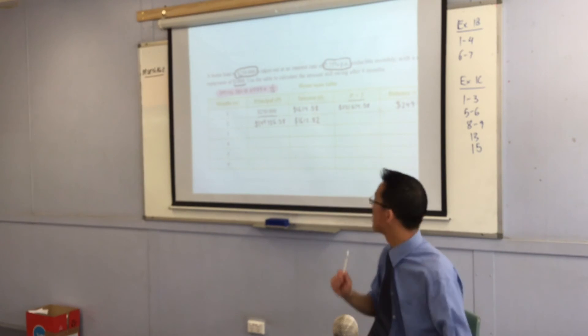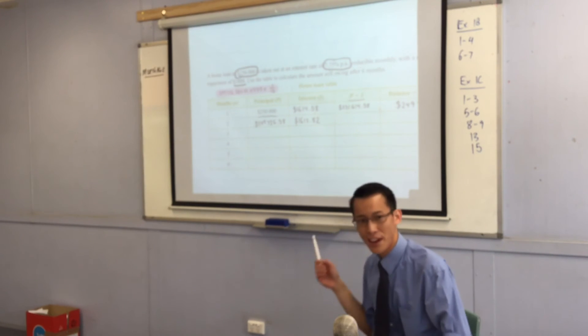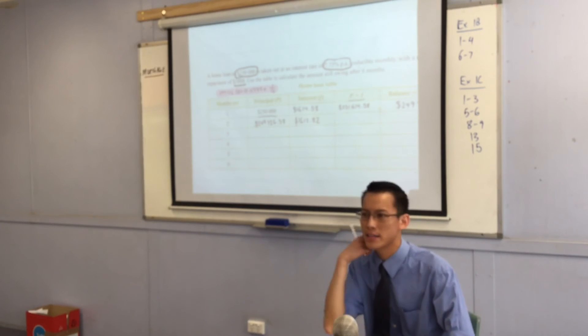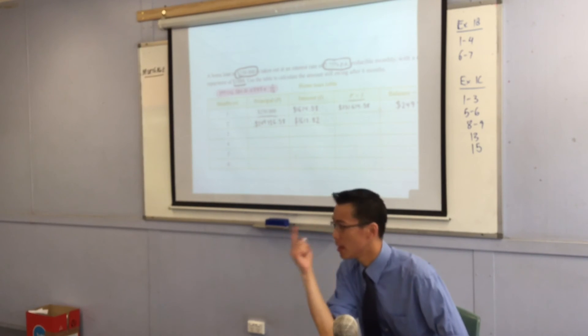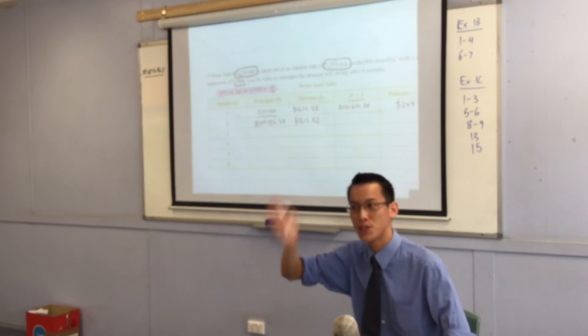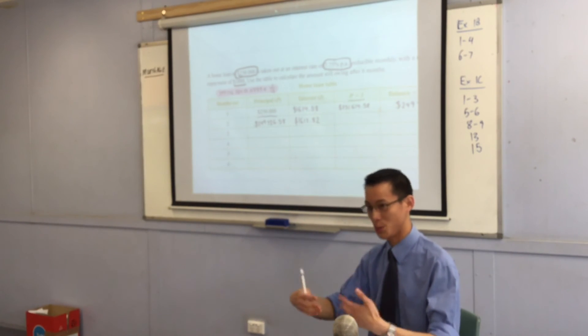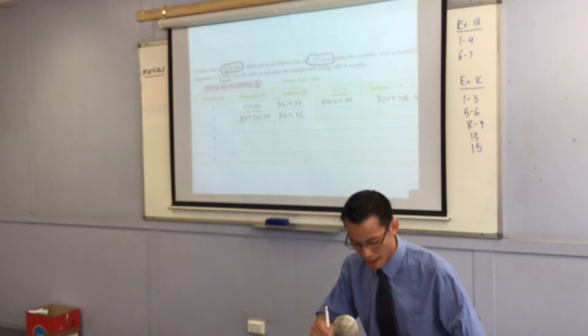So can you see what's happened? The interest from month two is ever so slightly smaller than the interest from month one. Why is that? Because the amount is smaller, we've reduced the balance. That's why these are called reducing balance loans.